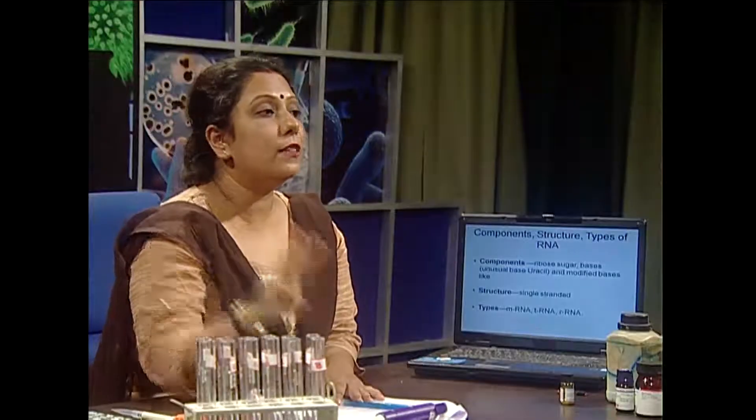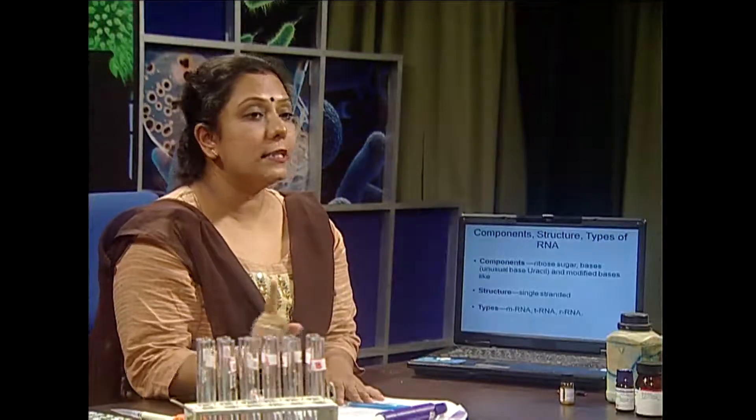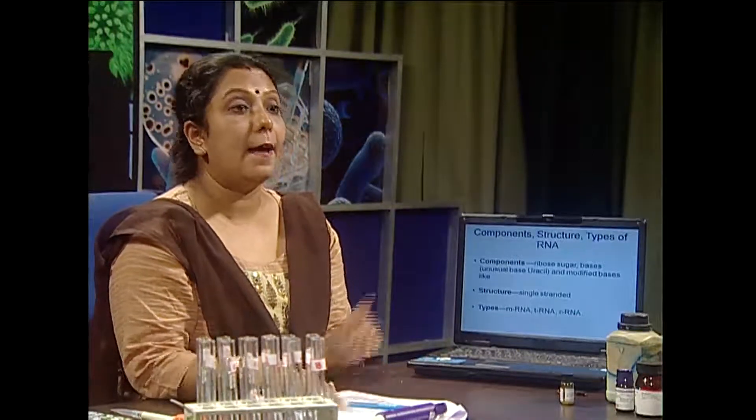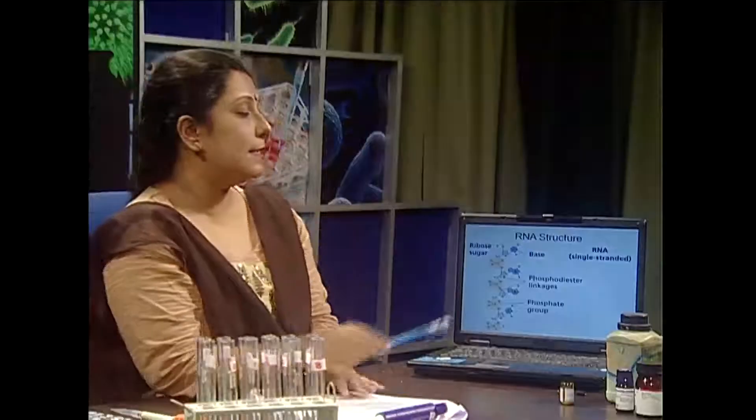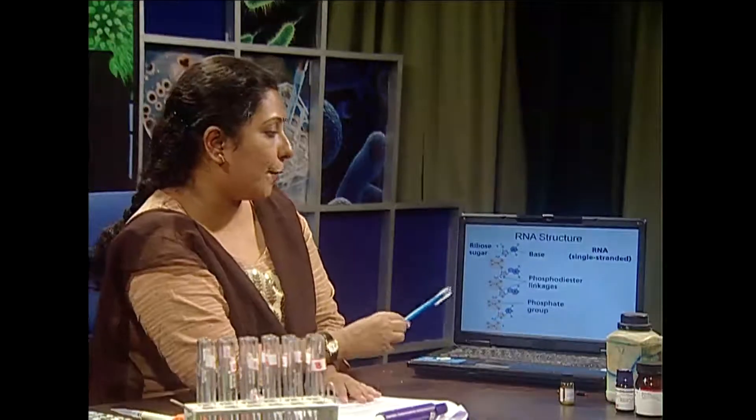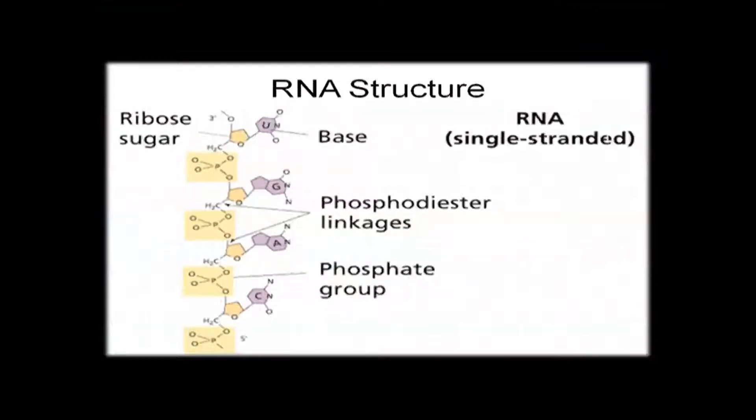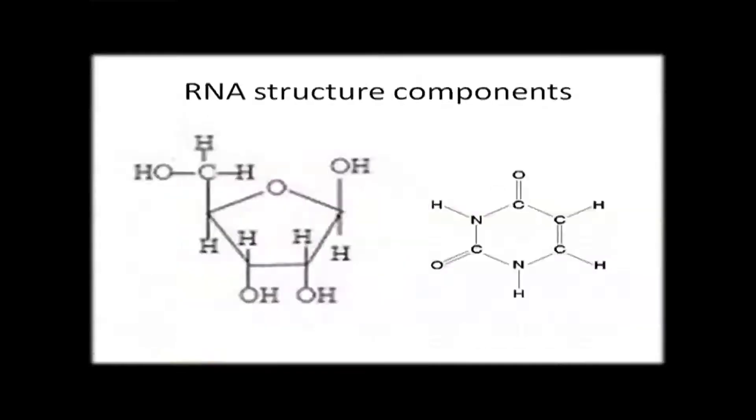RNA structure is single-stranded and there are mainly three types: mRNA, tRNA, and rRNA — messenger RNA, transfer RNA, as well as ribosomal RNA. This is the general structure of RNA, and you can follow the presence of phosphodiester linkage. In RNA structure, you can find the presence of ribose sugar, so at the 2' position a hydroxyl group is present.